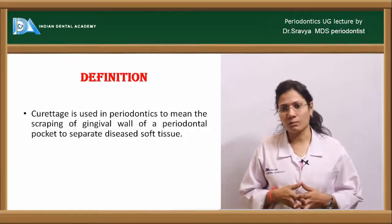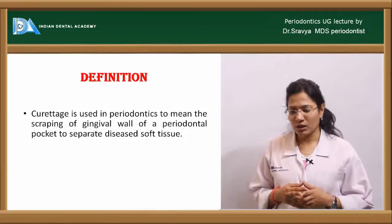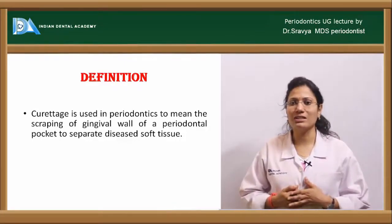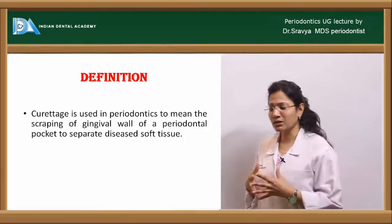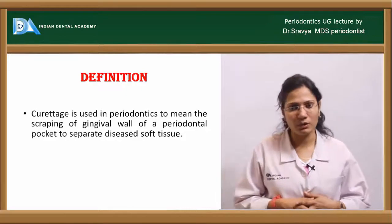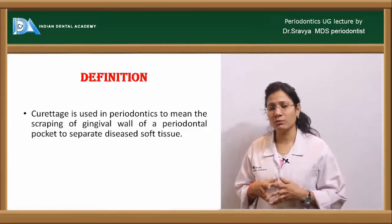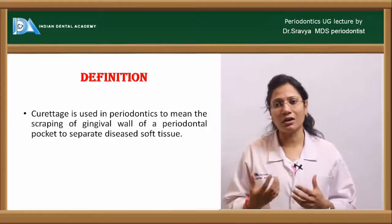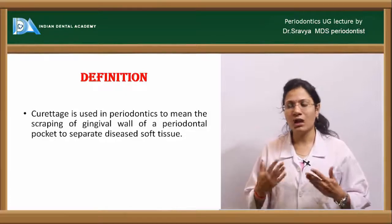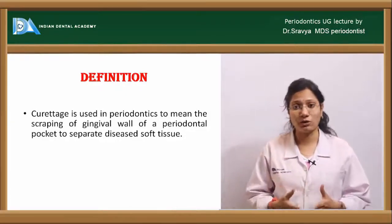The periodontal pocket is nothing but a pathologically deepened gingival sulcus, which is always lined by sulcular epithelium. When this becomes a pocket, the sulcular epithelium turns into the lateral wall of the periodontal pocket. Because it is diseased, it is constantly under the influx of microorganisms and their toxins.